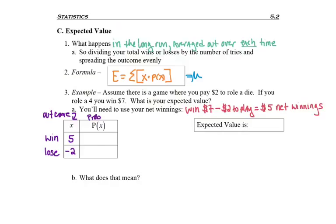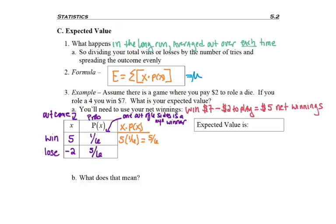The probability of winning would be 1/6, because one of the six sides of the die is a 4, which is a winner — only one of the six sides wins. That means the other 5/6 of the sides of the die lose. According to the expected value formula, I need to multiply those outcomes with their probability to get 5/6 and negative 10/6, and add them. Since both fractions have the same denominator, I just add the numerators: 5 and negative 10 gives negative 5.